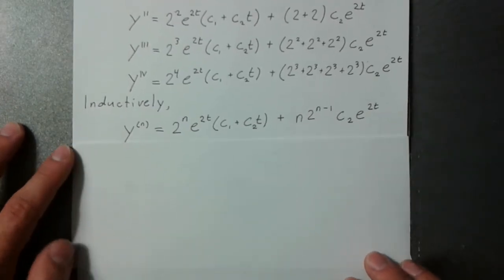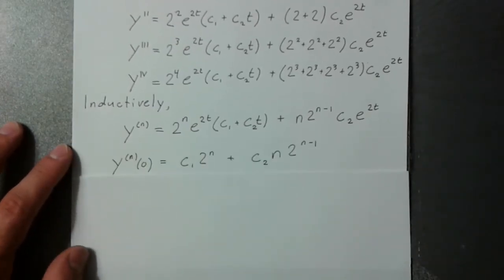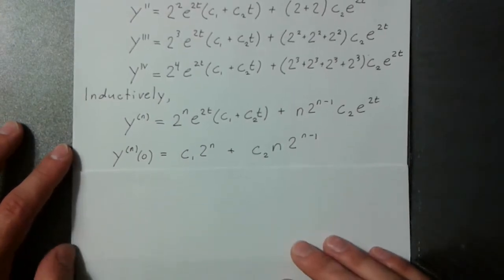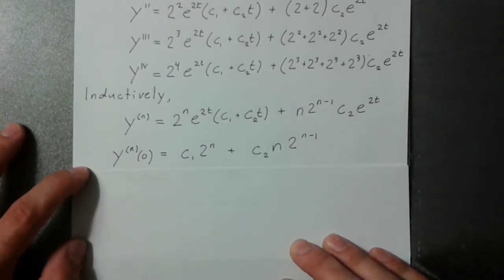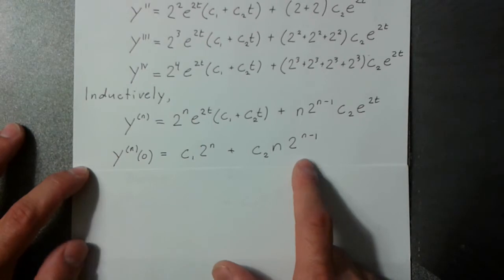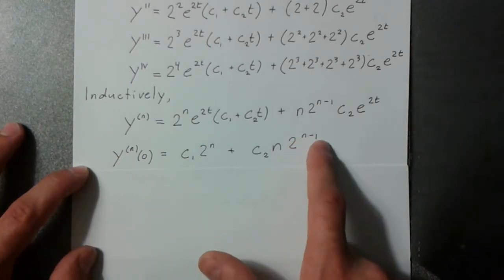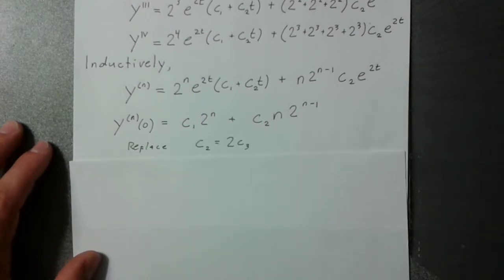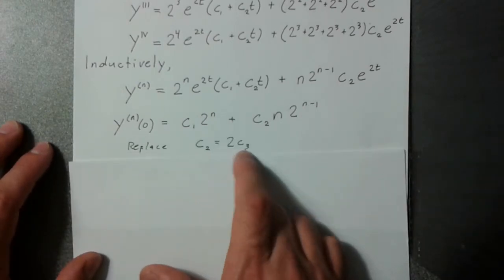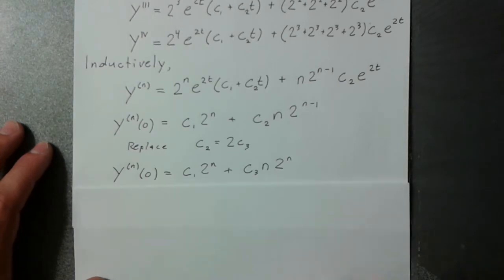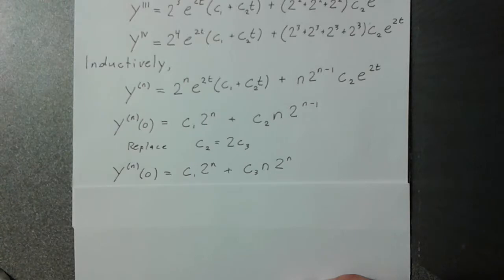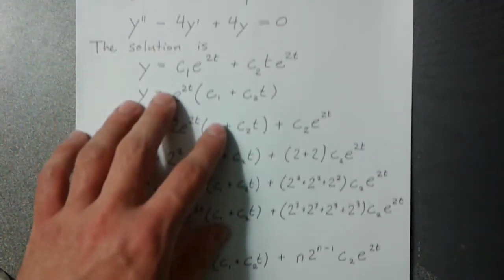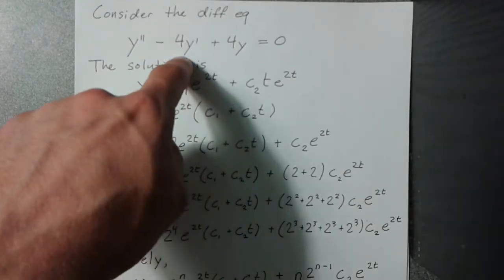And so then from there, you just take it, you evaluate it at your favorite point, which is always 0 for me, and this is what you get. And kind of oddly over here, you have this 2 to the n minus 1, but you can fix that by fudging around with the arbitrary constants if I replace c2 with 2 times c3. I'll get this. So this is the nth derivative evaluated at 0 of the solution to this differential equation.